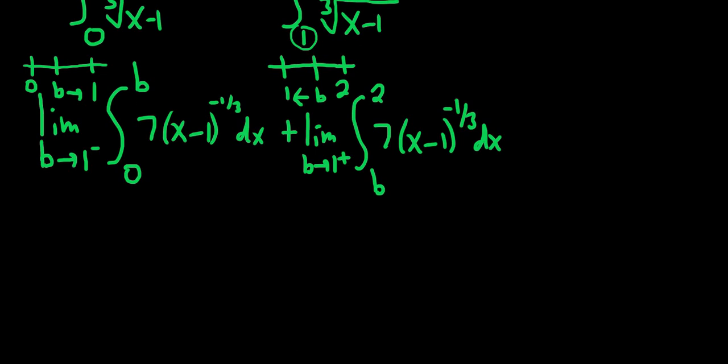So to integrate this, we're technically supposed to make a u substitution. You would let u equal x minus 1. And then so du is just dx. So because du is just dx, nothing else is going to happen. So we can be a bit abusive here and just integrate it without making a u sub. So this is the limit as b approaches 1 from the left of 7. And then we have x minus 1. We're adding 1. So negative 1 third plus 1 is negative 1 third plus 3 thirds, which is 2 thirds. And when you divide by 2 thirds, you really multiply by 3 over 2. That's the power rule. We're dividing by 2 thirds. So that results in a multiplication by 3 halves.